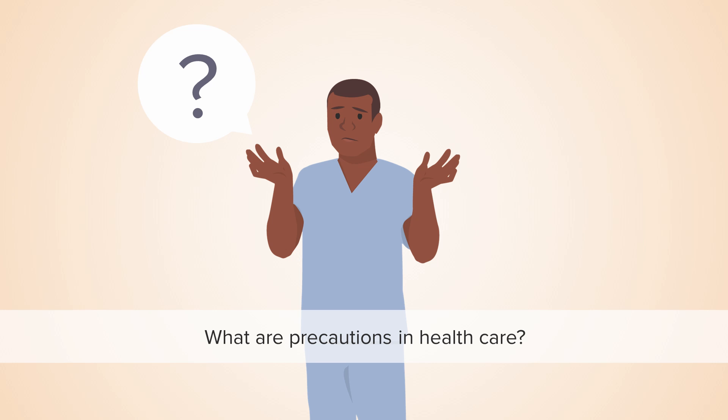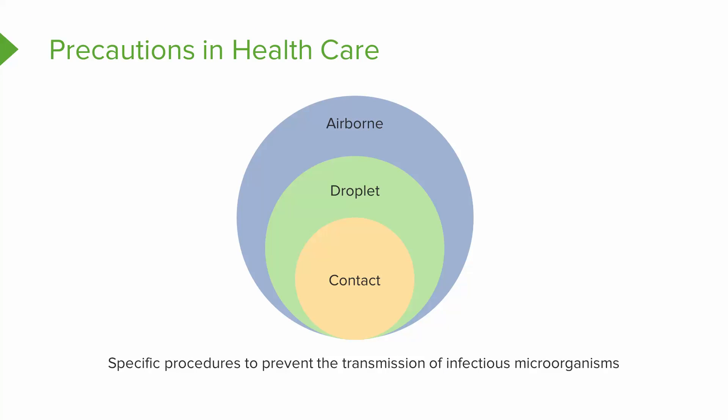If you had to come up with a definition, how would you describe them? Well, precautions are very specific procedures. The goal is to prevent the transmission of infectious microorganisms. Think of it like these three circles that you see on your screen: contact, droplet, and airborne. Now it can be very difficult to maintain airborne precautions as it requires extra special equipment, but we'll get to more of that later.